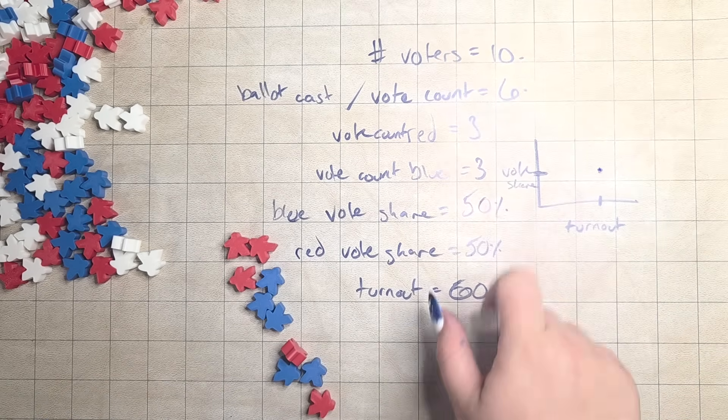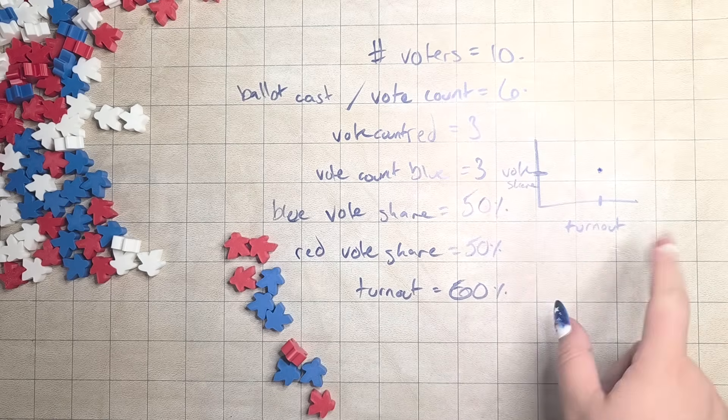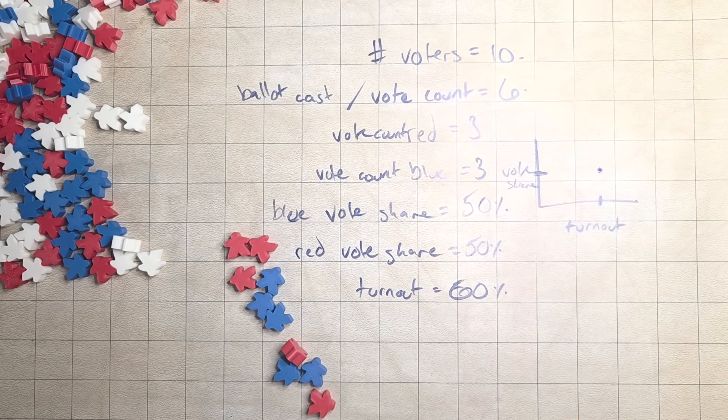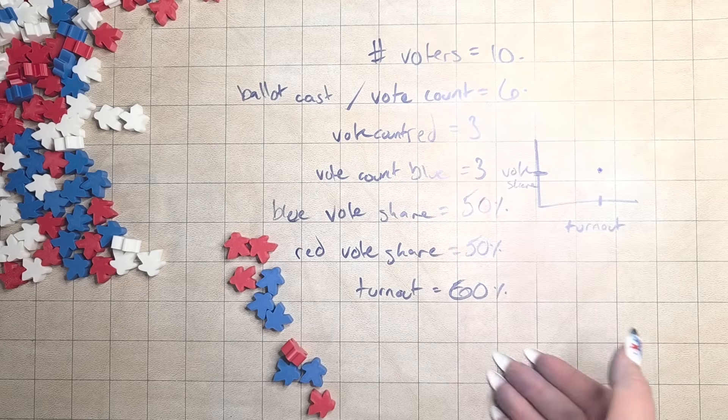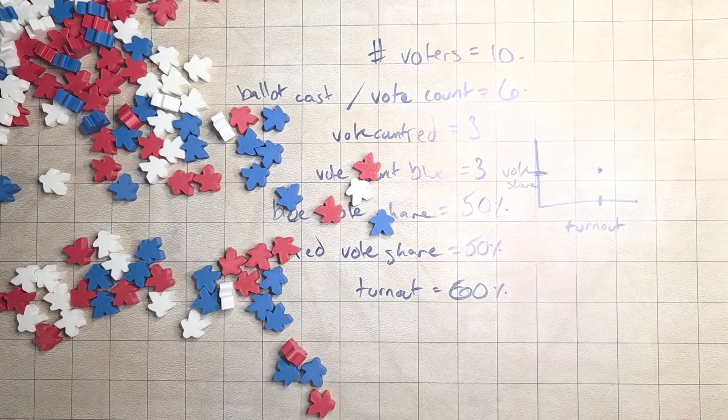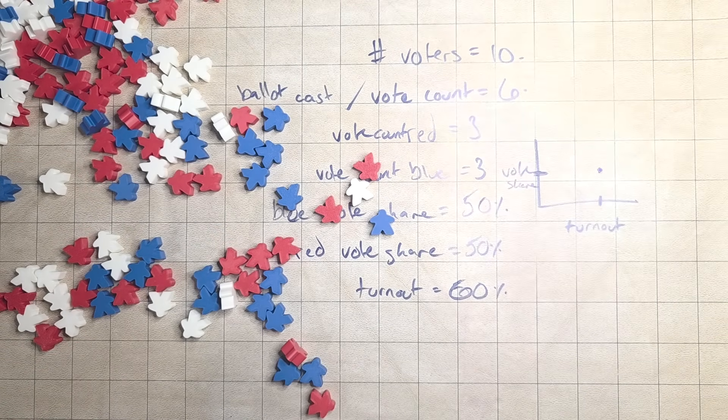And this is how you get one data point for a vote share turnout scatter plot. We'll go over more of these charts in a future video, but please let us know if there's any questions that you want us to answer with Meeple. Thank you. Have a nice day.